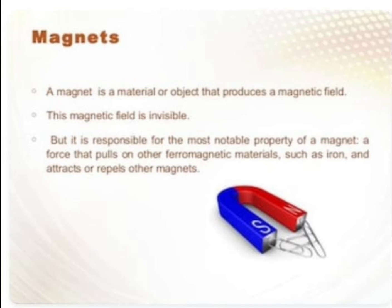Magnet क्या है? Magnet एक ऐसा object है जो कि magnetic field produce करता है और ये magnetic field दिखाई नहीं देती। लेकिन ये responsible होती है एक ऐसी force के लिए जो कि ferromagnetic substances जैसे कि iron, nickel, cobalt — इनको attract करता है, अपनी तरफ खींच लेता है।